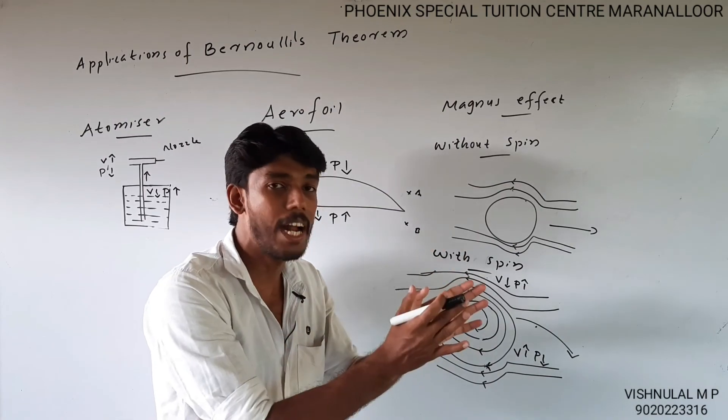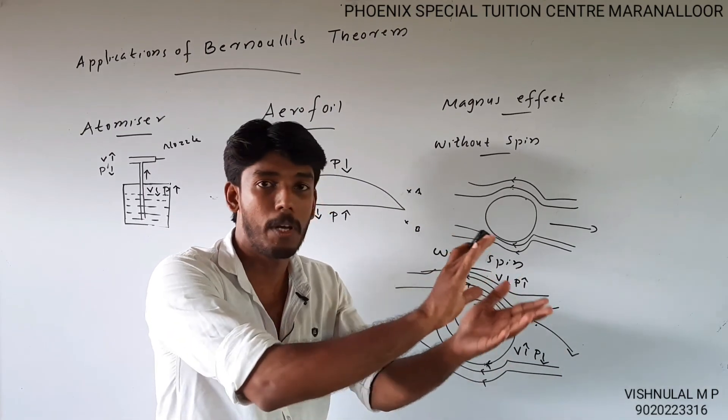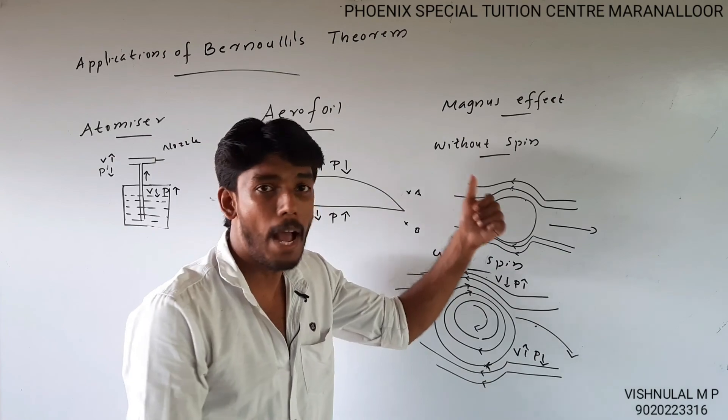This pressure difference causes the ball to curve. That's why the ball follows a curved path. This is called the Magnus Effect.